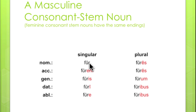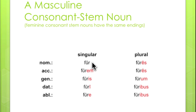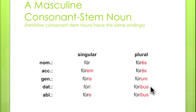Here is the declension of 'fur, furis': fur, furem, furis, furi, fure — furis, furis, furibus, furibus. Of course, the nominative singular in third-declension nouns is a little odd in that its ending is not predictable. As a result, we're not going to identify any particular ending for the nominative singular of third-declension nouns. The other forms in red constitute the standard masculine and feminine third-declension endings: -m, -is, -e, -e, -es, -es, -um, -ibus, -ibus.